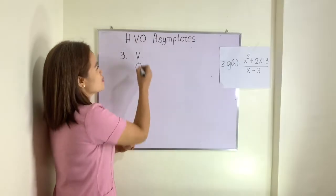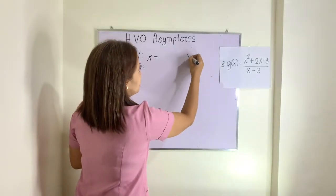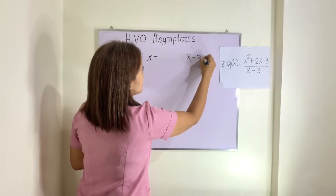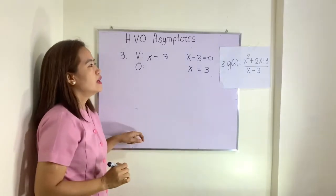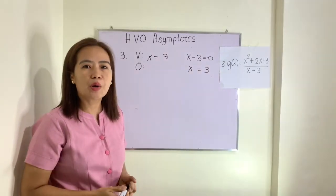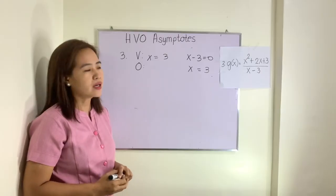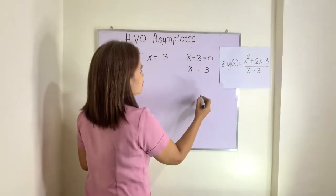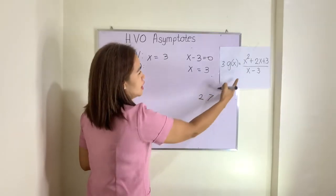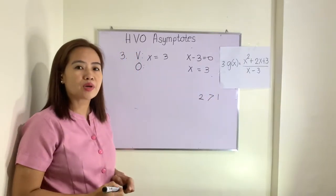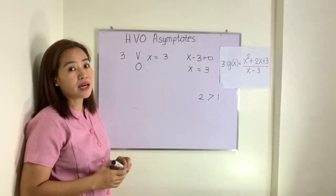For example number 3, the vertical asymptote: set the denominator x minus 3 equal to zero, solve for x — x equals 3. In this case, there is no horizontal asymptote. Instead, we have an oblique asymptote. Why? Because the degree of the numerator, which is 2, is greater than the degree of the denominator, which is 1. When that happens, we do not have a horizontal asymptote — we have an oblique or diagonal asymptote.